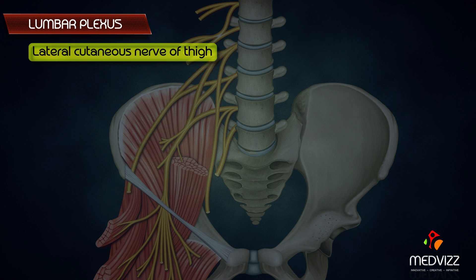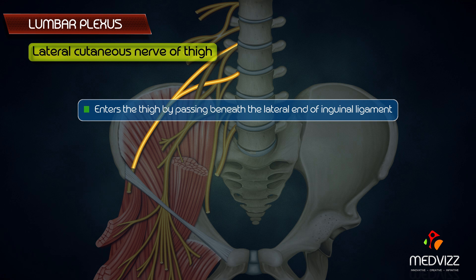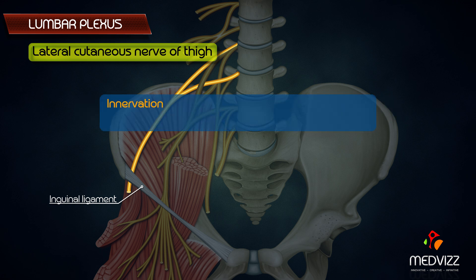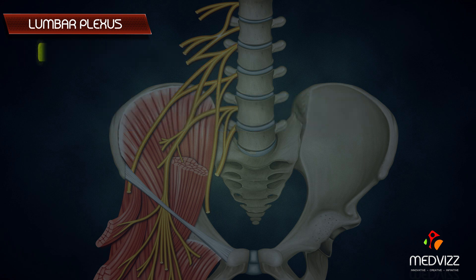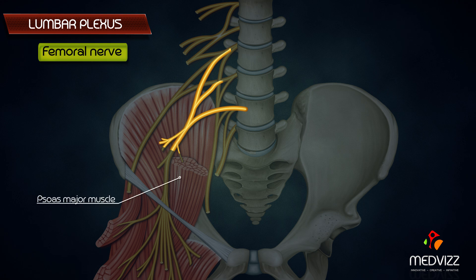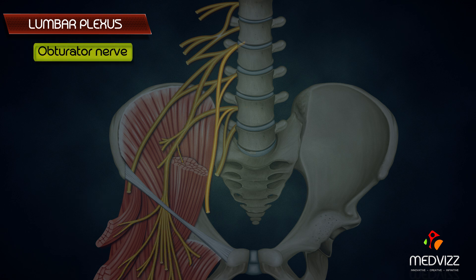The lateral cutaneous nerve of the thigh, also called the lateral femoral cutaneous nerve, emerges beneath the lateral border of the psoas major above the iliac crest and runs laterally in front of the iliacus muscle. It enters the thigh by passing beneath the lateral end of the inguinal ligament, providing cutaneous innervation to the upper lateral aspect of the thigh. The femoral nerve emerges beneath the lateral border of the psoas major below the iliac crest and enters the anterior compartment of the thigh by passing deep to the inguinal ligament — it will be discussed in detail as a separate topic.